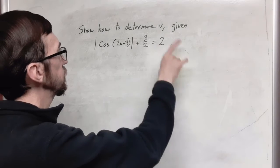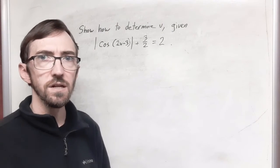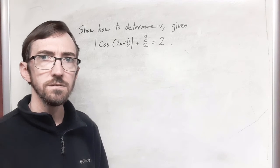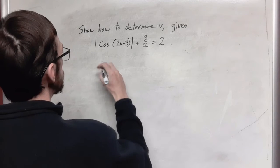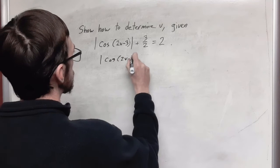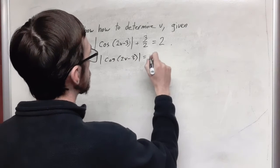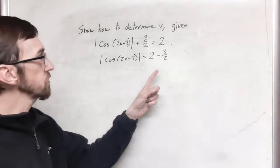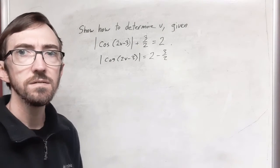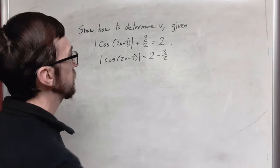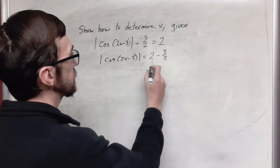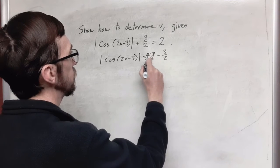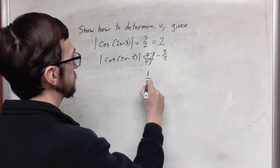The first thing that I want to do is I want to move the three halves to the right-hand side so that I have only the absolute value expression on the left-hand side. So now that we have this we are just going to do the arithmetic on this side. Doing the arithmetic on this side we are going to have to change forms. This is 2 over 1 and then we multiply top and bottom by 2. So we end up with 4 over 2. So we have 4 minus 3. This is going to be 1 half.